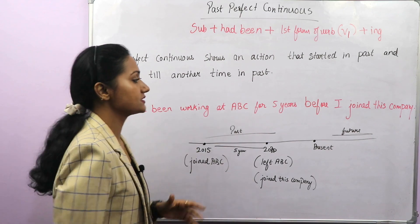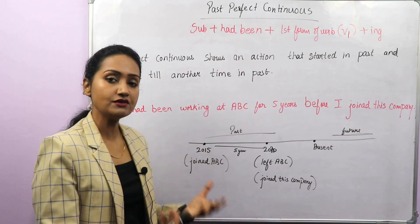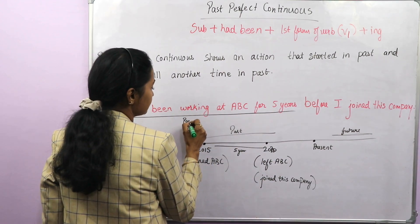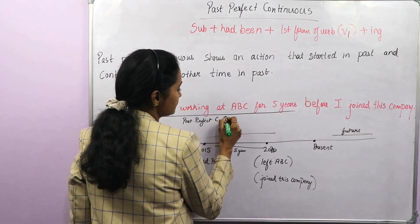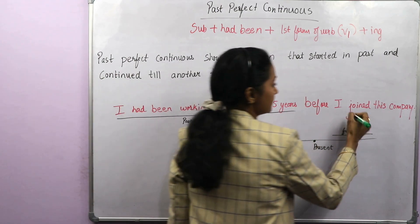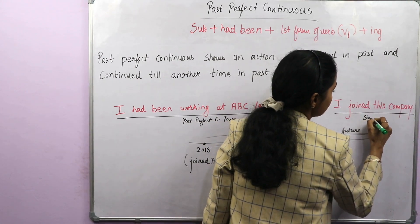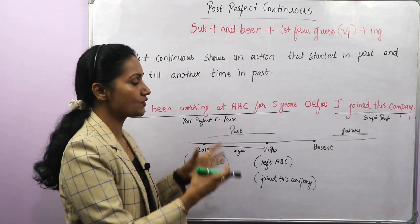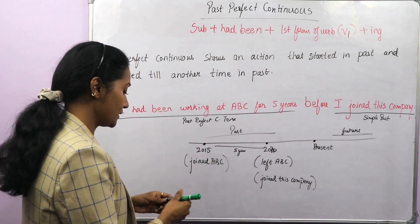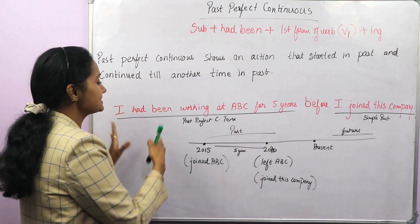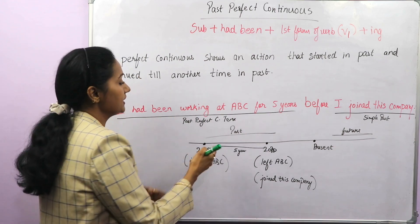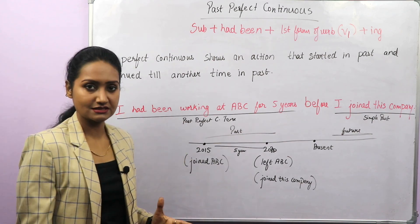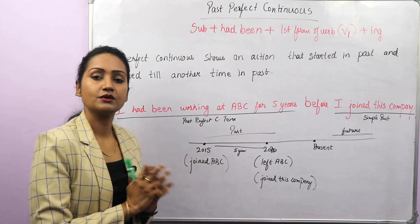We use past perfect continuous tense in these kinds of sentences wherein we have a combination of past perfect continuous tense and simple past. Now look at the structure as well: I — subject — plus had been plus work — the first form of the verb — plus ing. So 'had been working' is the verb tense. That's how we construct a sentence in past perfect continuous.